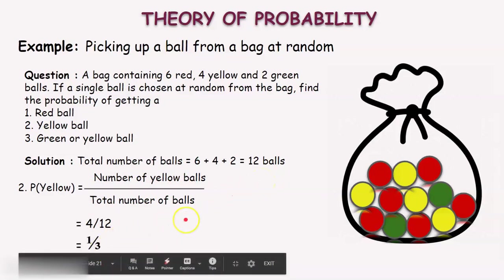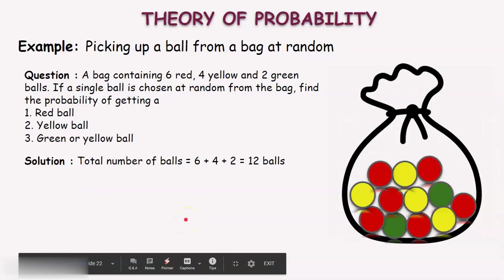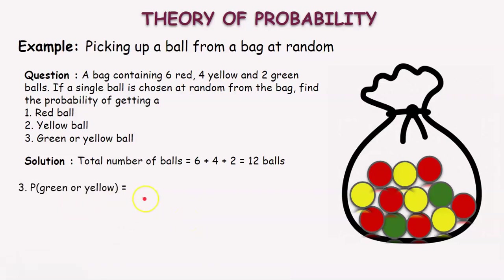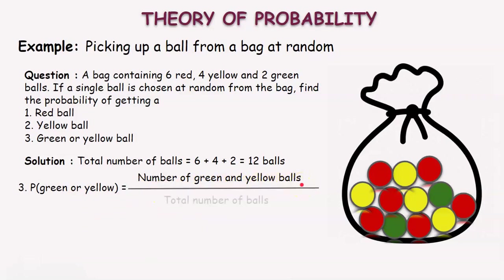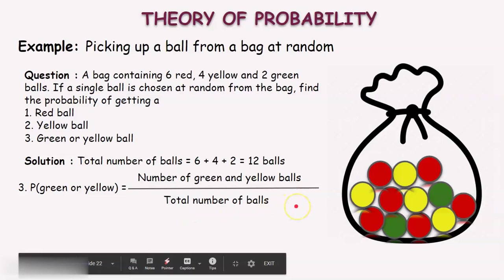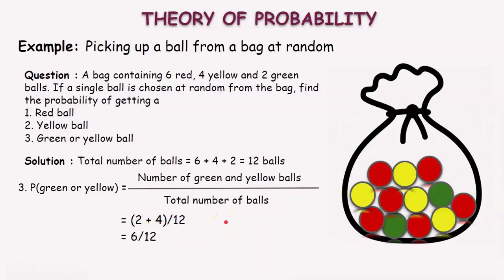Now, to calculate the probability of getting a green or yellow ball, the favorable outcomes are the number of green balls plus the number of yellow balls, divided by the total number of balls. That is 2 plus 4 by 12, which equals 6 by 12, which is 1 by 2.